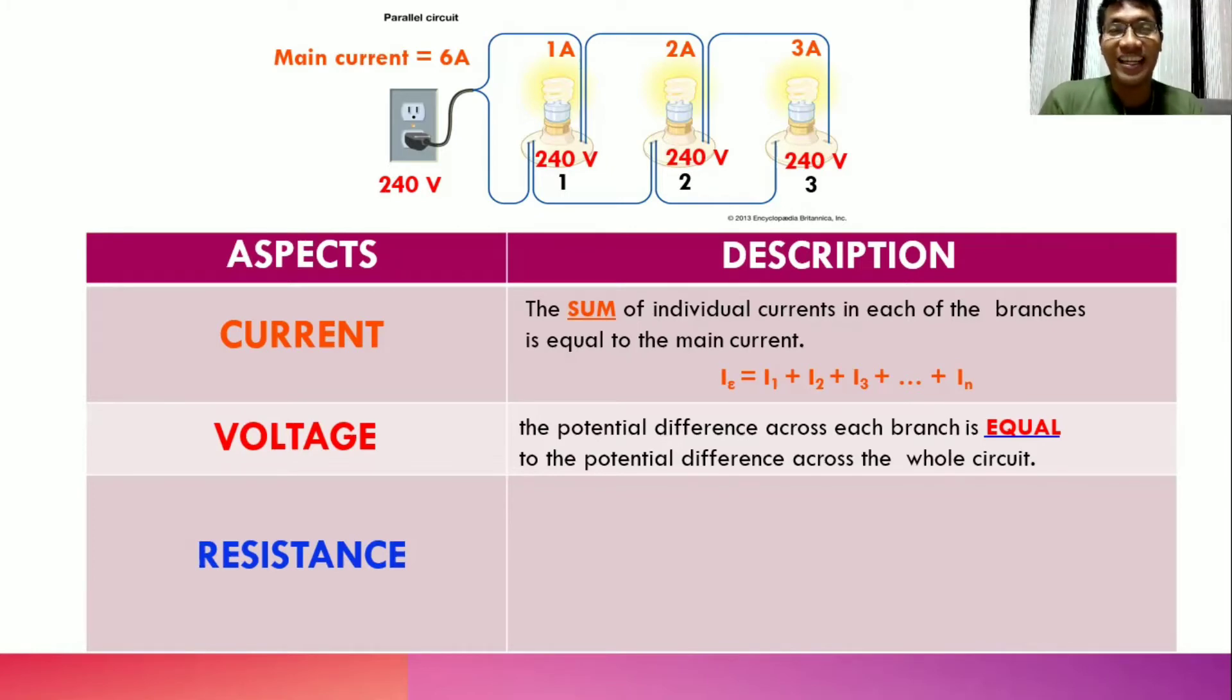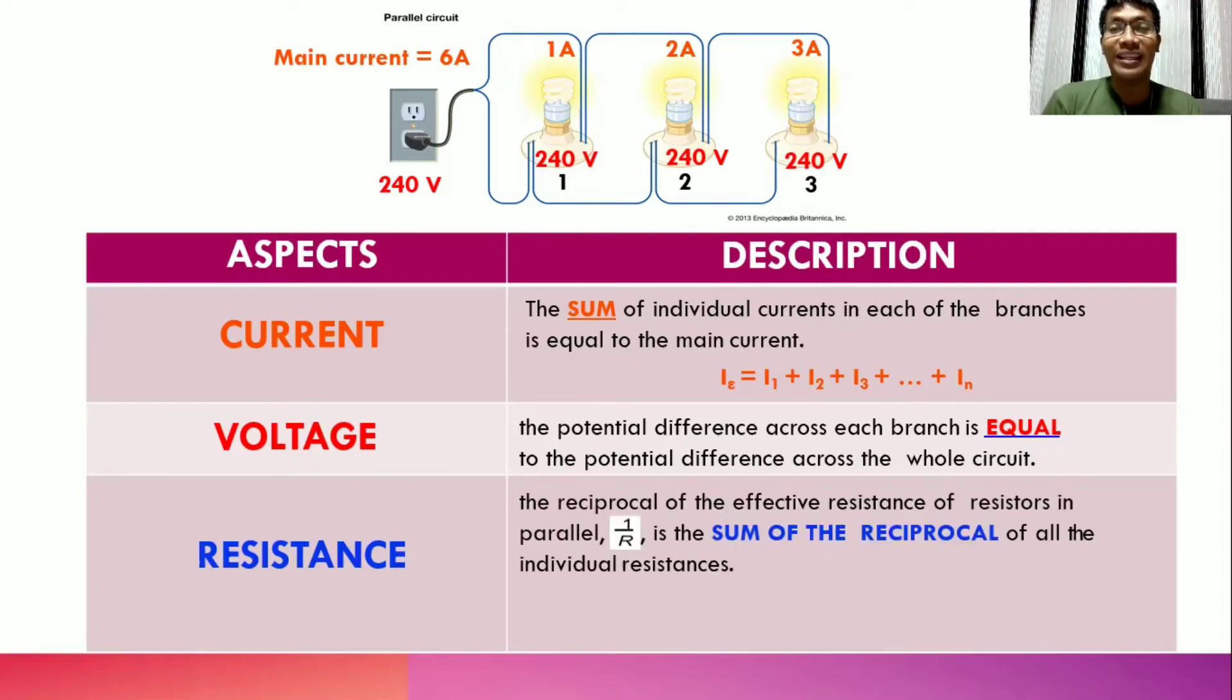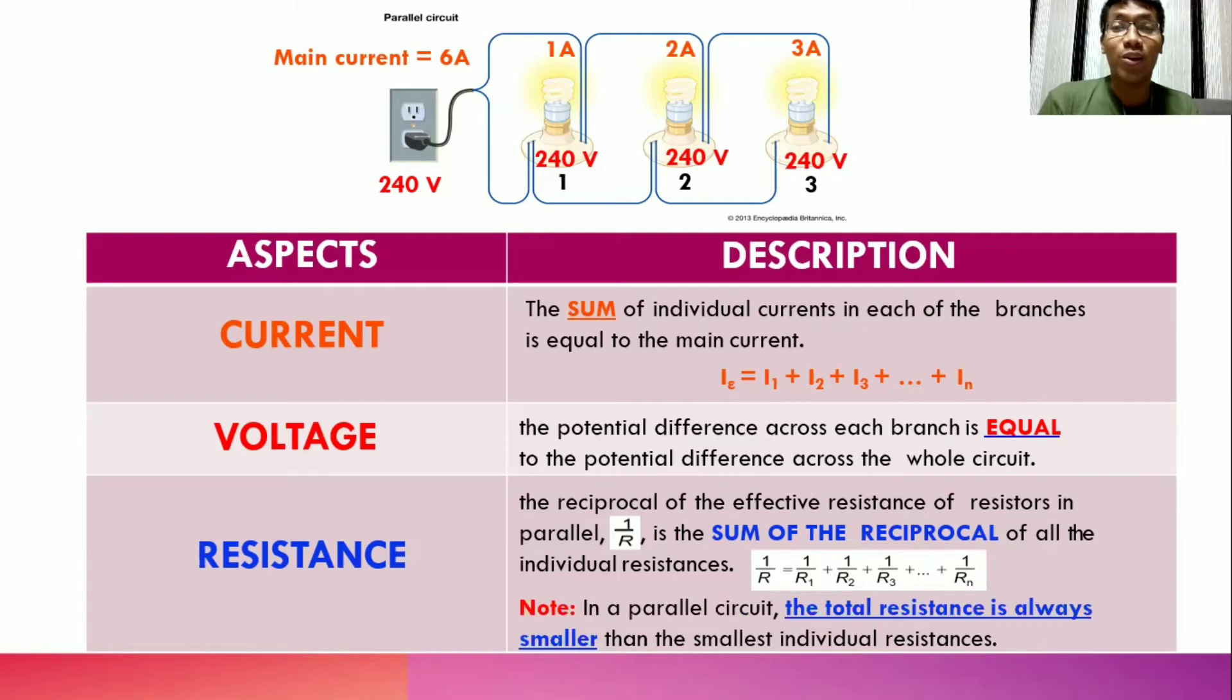Lastly, resistance in parallel circuit. For us to get the reciprocal of the effective resistance or total resistance in a circuit, we have to get the sum of the reciprocal of all the individual resistance. We can express it using this equation. As you apply this equation, you would observe that the total resistance is always smaller than the smallest individual resistance.